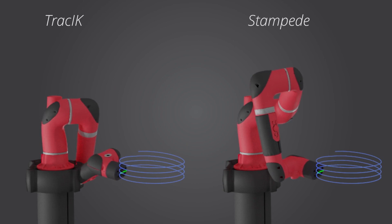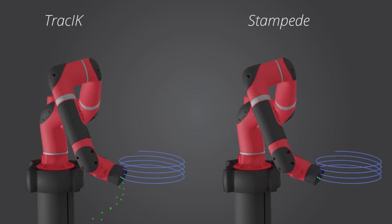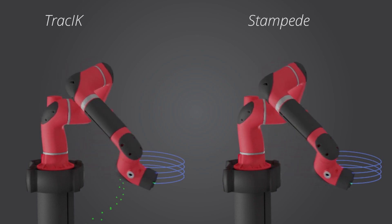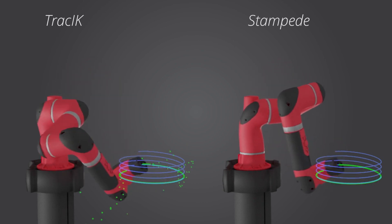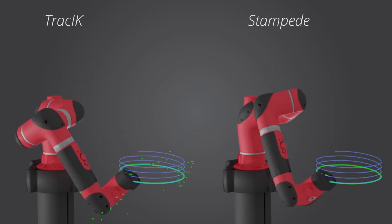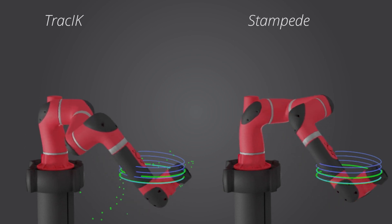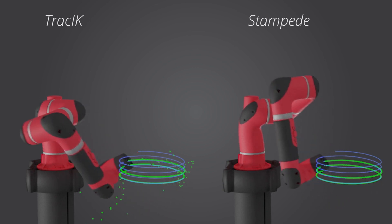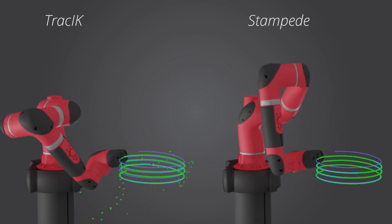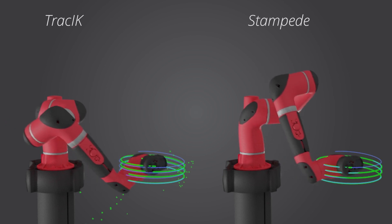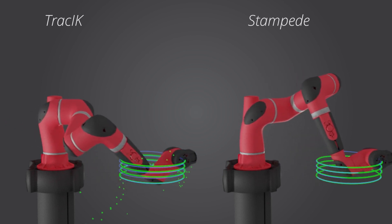When using a direct IK solver at each update, like Track IK seen here, the solver exhibits issues such as self-collisions, kinematic singularities, and joint space discontinuities.